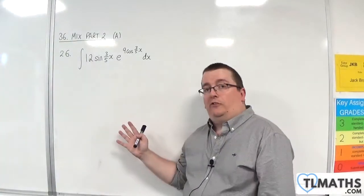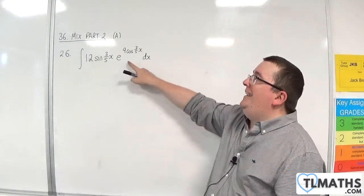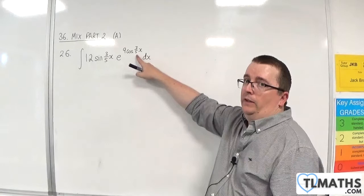So this is question number 26. We've got the integral of 12 sine 3/5 x times e to the 9 cosine of 3/5 x.